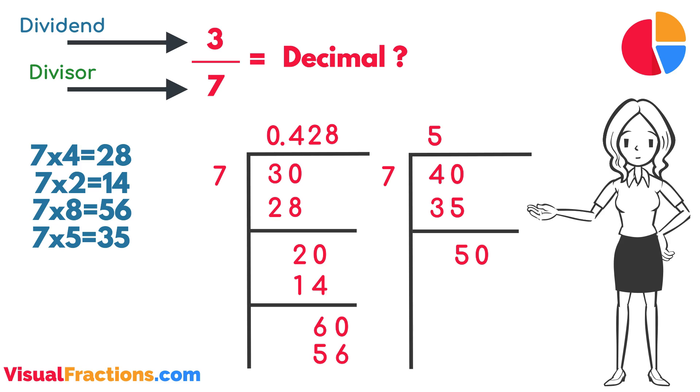Adding another zero to bring down gives us 50. How many times does seven fit into 50? Seven times. Adding seven to the quotient, we have 0.42857. Multiplying seven by seven gives us 49, and subtracting this from 50 leaves us with one.